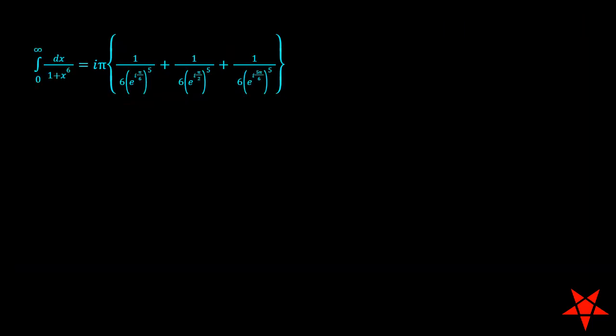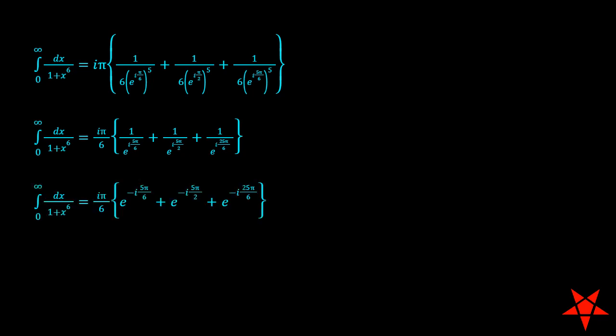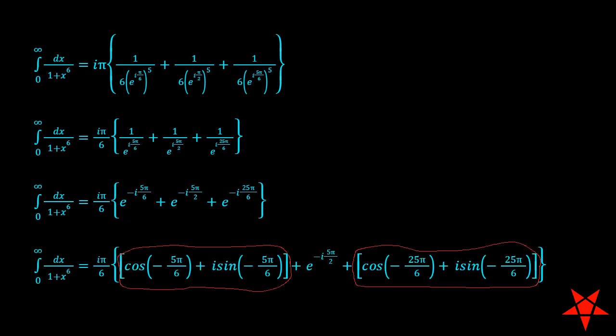First things first, we move the factor of 6 in the denominator outside of the brackets. Next, we augment the exponents in each of the complex numbers with a minus sign which moves them from the denominator up to the respective numerators. From here, we focus on the terms that contain angles 5 pi over 6 and 25 pi over 6 and use Euler's relation to separate them into real and imaginary components. I can hear someone on the internet yelling about 5 pi over 2 right now. We will get to it shortly.